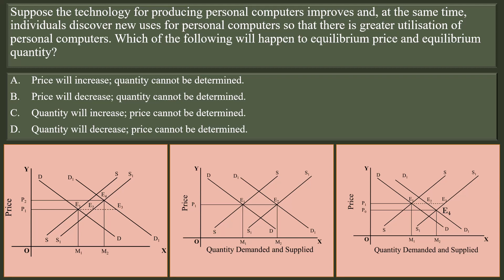In the first graph, that is the left extreme graph, increase in demand is greater than increase in supply. In this case, price increases from P1 to P2, and quantity increases from M1 to M2. In the second case, the increase in demand is exactly equal to the increase in supply. In this case, price remains unchanged, but quantity increases from M1 to M2.